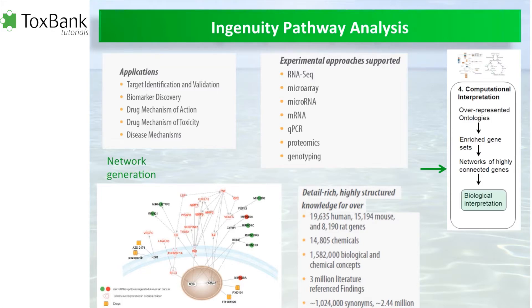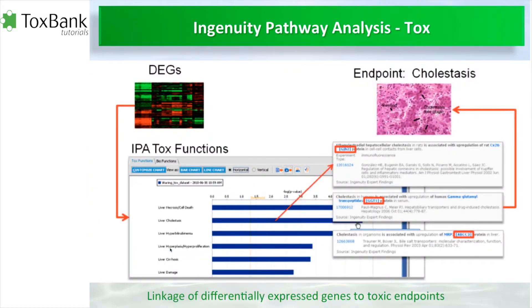The web address can tell you more, but the database is up to close to three and a half million literature references, a lot of which comes from text mining. When you provide your gene list or your specific set of differentially expressed genes, this database and tool can make molecular networks. It also has a specific toxicity function valuable for toxicology, so you can link differentially expressed genes to toxicity endpoints.